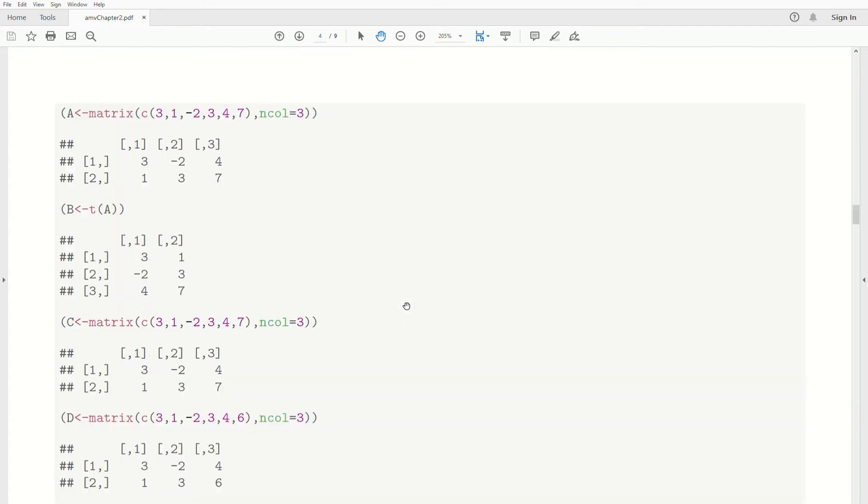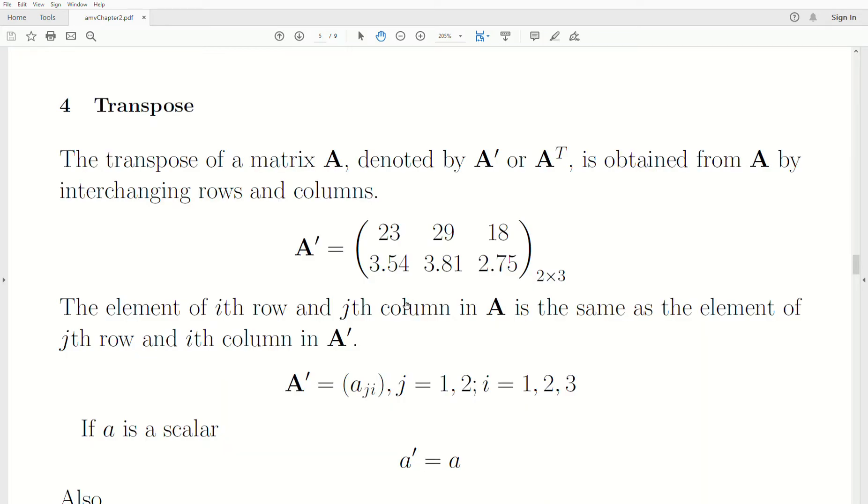And we're going to discuss transpose today. So the transpose of a matrix A denoted by A prime or A capital T, both pronounced A transpose, is obtained from A by interchanging the rows and the columns.